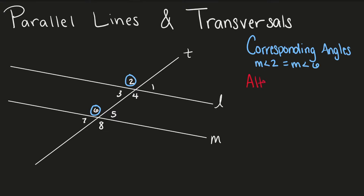Angle 3 and angle 5 are called alternate interior angles. These angles are on the interior of our parallel lines and they alternate our transversal. Therefore, we call them alternate interior angles, and alternate interior angles are congruent.